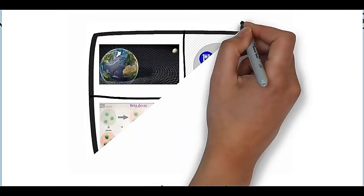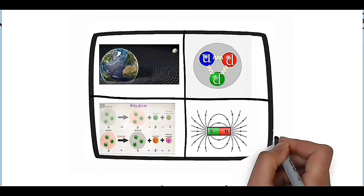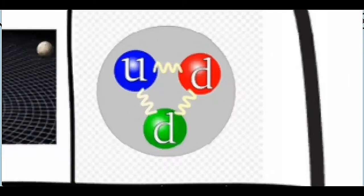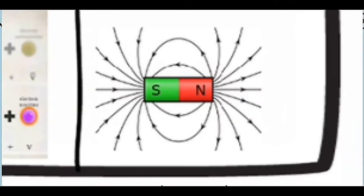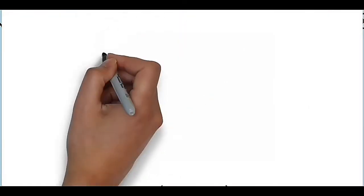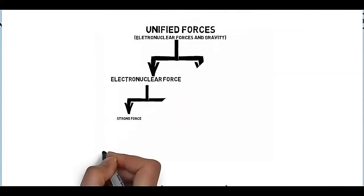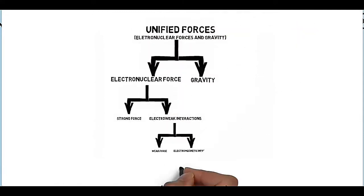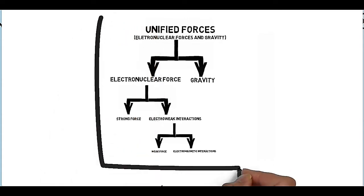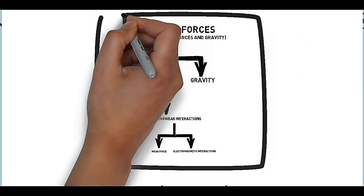We all know that our universe is operated upon by four fundamental forces of nature, namely gravity, strong interaction, weak interaction, and electromagnetic interaction. These four forces are manifestations of a single unified force that operated upon the universe in the distant past. As the universe evolved with time, the force suffered bifurcation and today we have four different forces.